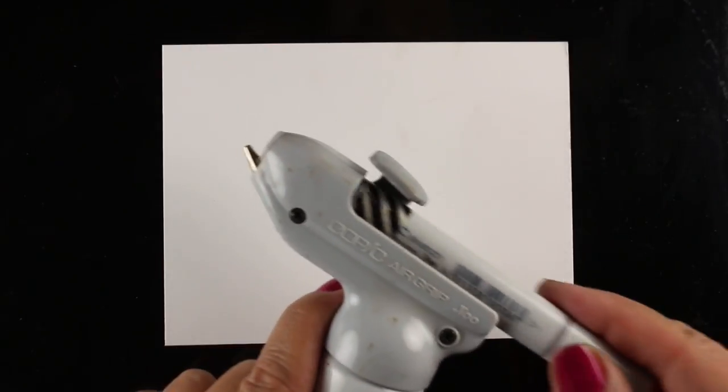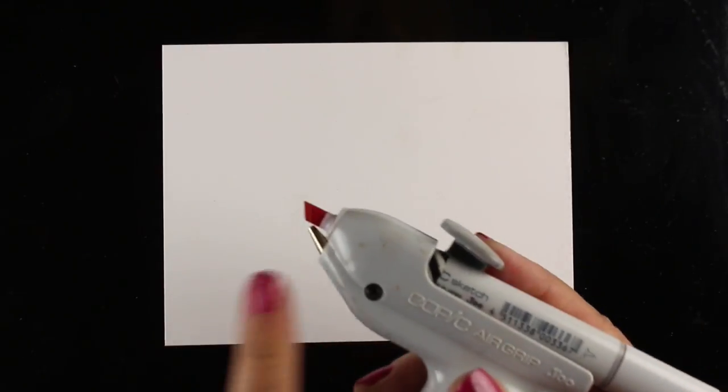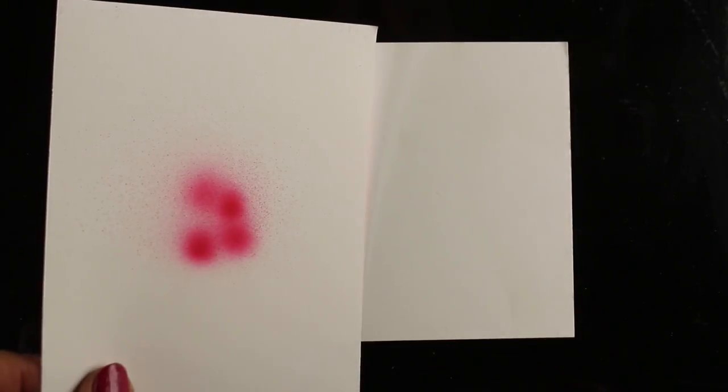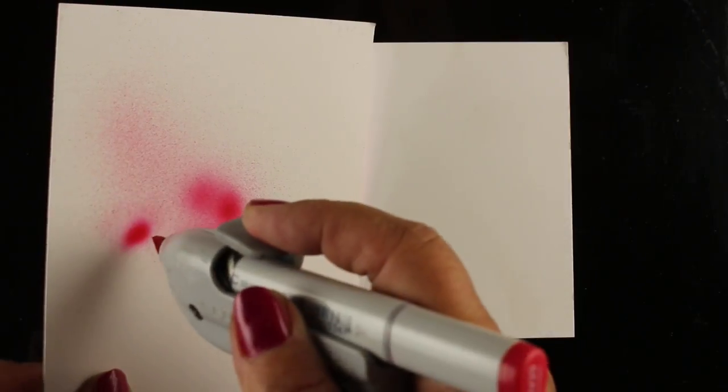I'll take my Copic marker and pop it into the air gun, kind of turn it so that I make sure I get it at the right angle. And when I press that button, I get a different kind of spray if I hold it way back or a different kind of spray when I hold it up close.